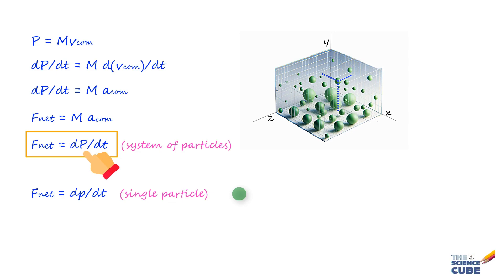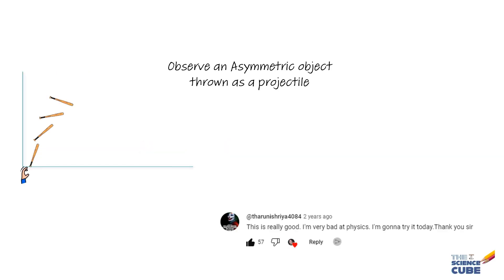Again, we can read this another way and say the linear momentum of a system will change only if an external force acts on it. That is, if there is no external force, P of the system will not change.